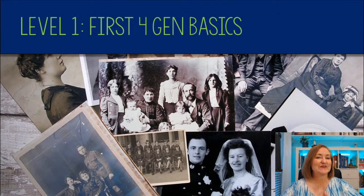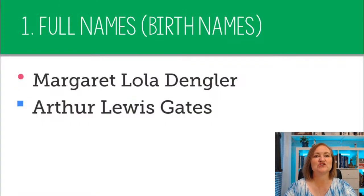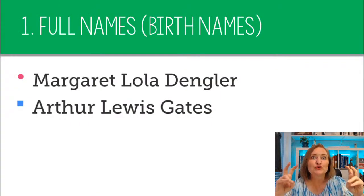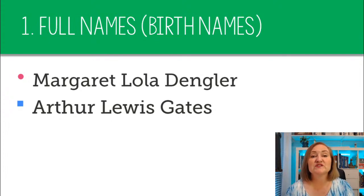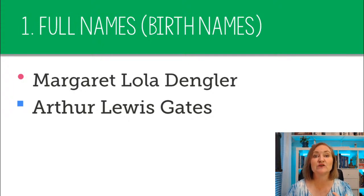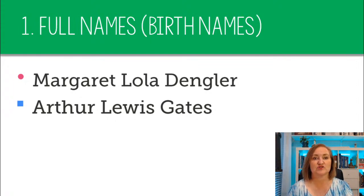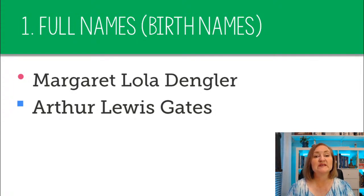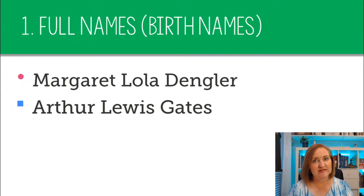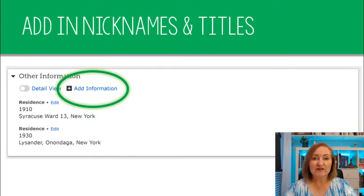Level one is the basics of the first four generations. When they say do your first four generations, what do they mean? The first thing we want is the full birth names of the people in those generations. I've used my family and some of my husband's family in this presentation. You'll notice I have my grandmother's middle name. Her married name was Nash, but in FamilySearch always use the maiden name. If you don't know the maiden name, don't put the married name in — just leave that maiden name field blank.